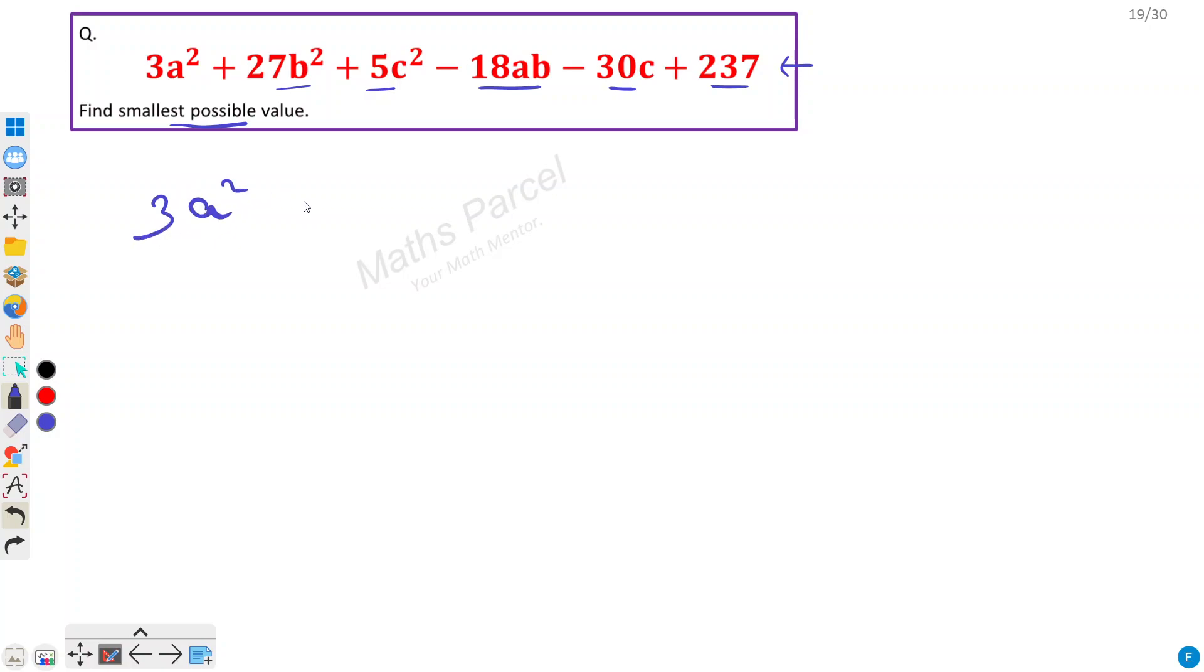Now let's rewrite this as 3a² + 27b². Now a and b terms are there so let's put this term here, minus 18ab, plus 5c² minus 30c plus 237. So in most of the problems to solve such questions on maxima minima you will try to complete the square.